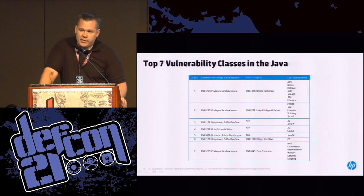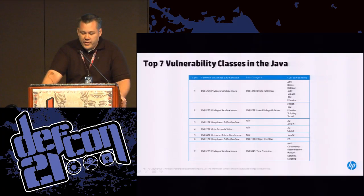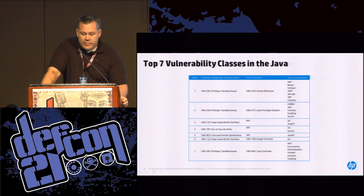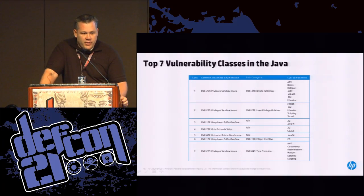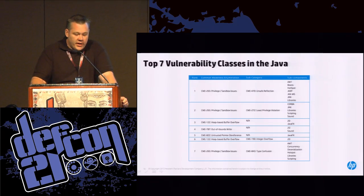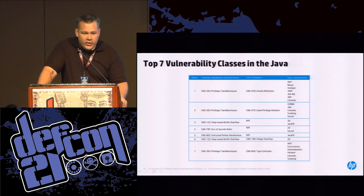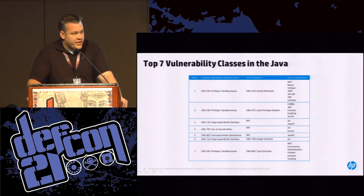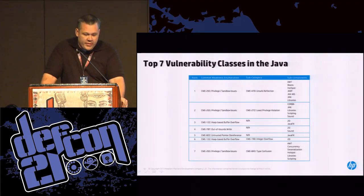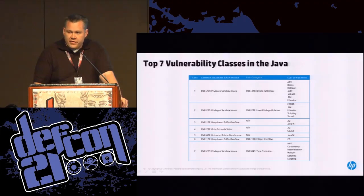Taking all this information, we're able to determine the top seven vulnerability classes in Java: number one being unsafe reflection — most popular in the library subcomponent; followed by least privilege, also most popular in the library subcomponent; followed by two classic memory corruption issues — heap-based buffer overflows and out-of-bounds writes, mostly ending up in the 2D subcomponent; untrusted pointer dereference — my favorite bug in the Java framework; heap-based buffer overflows due to integer overflows; and then type confusion issues.